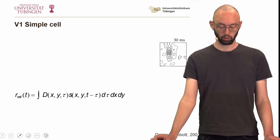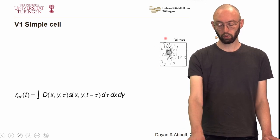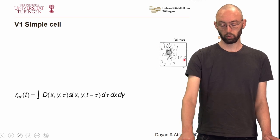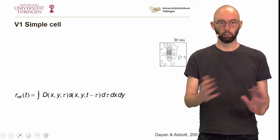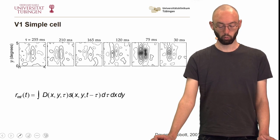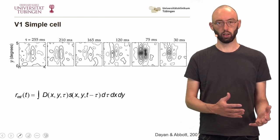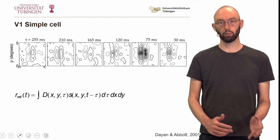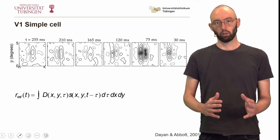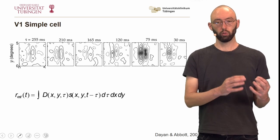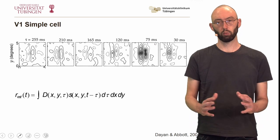For a V1 simple cell in space and time, the receptive field might look like this. If we go back about 30 milliseconds in time, we have a spatial receptive field with an elongated positive shape and an elongated negative shape. Going back through time, this becomes more pronounced and then fades again. This convolution can be in three dimensions — over space and time. The neuron's latency, the delay between a change in the stimulus and a change in firing, was probably about 75 milliseconds, where the receptive field has its strongest expression.